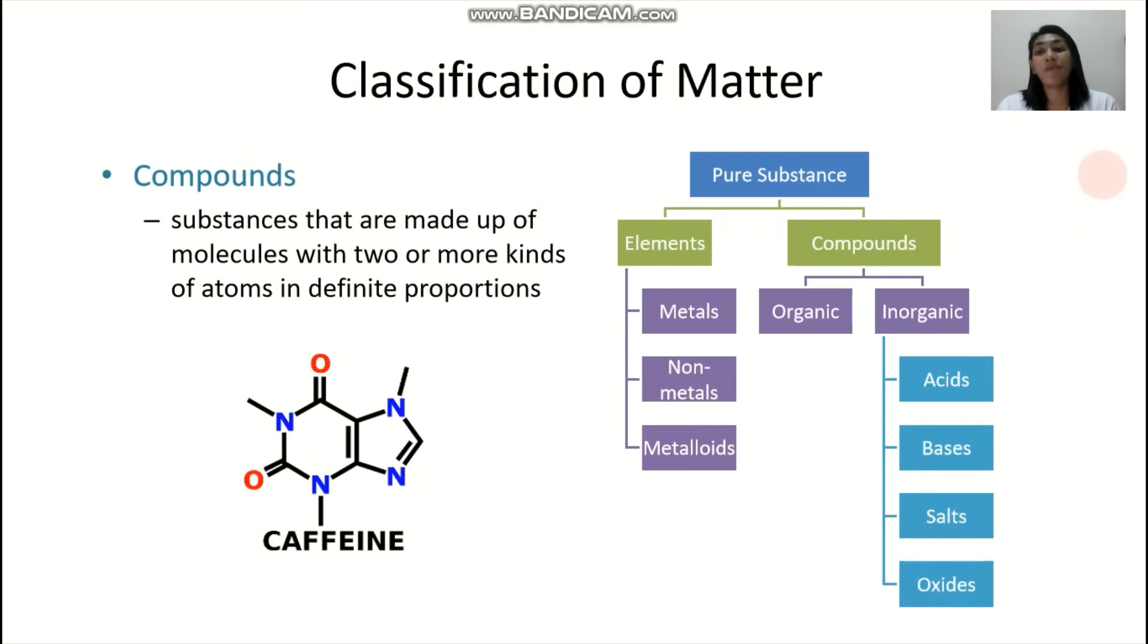So next, you have your compounds. Compounds are substances that are made up of molecules with two or more kinds of atoms in definite proportions. So example, I have here my favorite compound, which is caffeine.